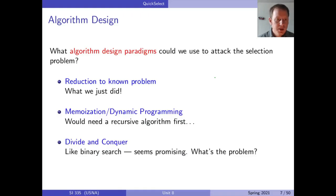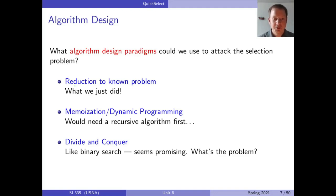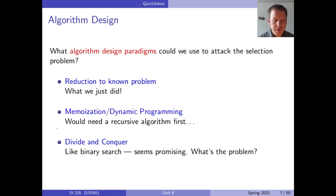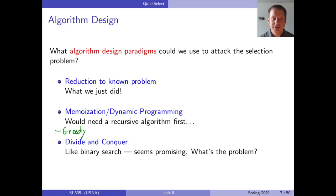So what can we do instead? Let's think about it from an algorithm design standpoint. We can try to reduce to a known problem — take tricks already in our bag like using heaps or sorting. Sometimes that only takes you so far. Memoization and dynamic programming is another big strategy, but you kind of have to start with the recursive algorithm before you can talk about that. Greedy mostly makes sense for optimization problems, and this isn't really one — there's really one correct answer. So we're going to think about a divide-and-conquer approach, and that's what's going to be useful.